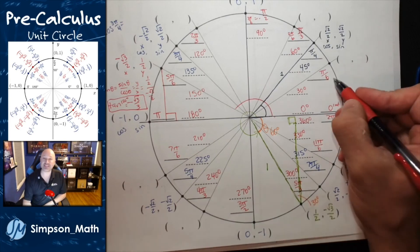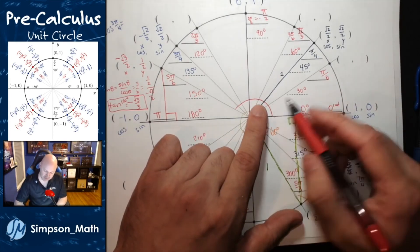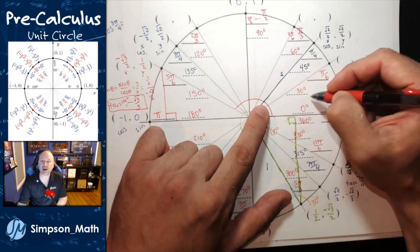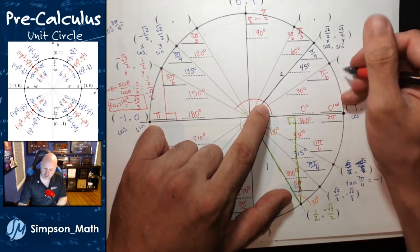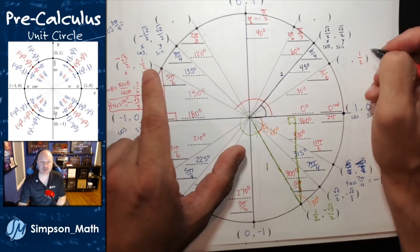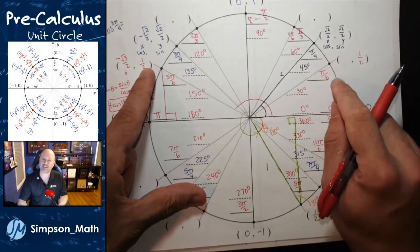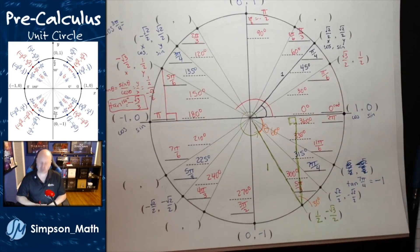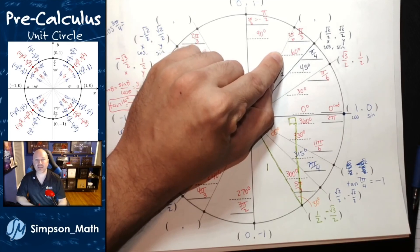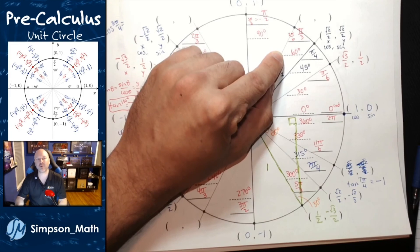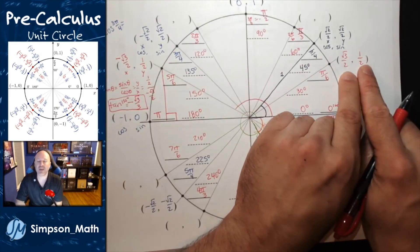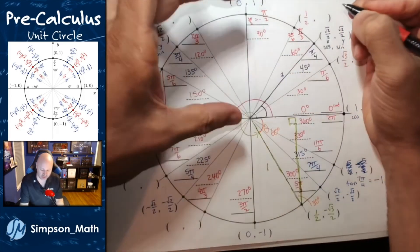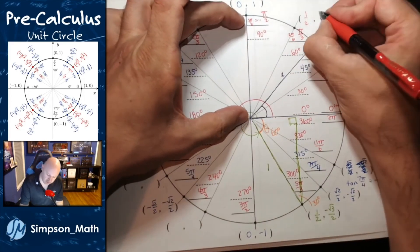In quadrant 1, at pi sixths (30°), the side length opposite the shorter angle is half the hypotenuse, so the y value is one half. The x value is root 3 over 2. For pi thirds (60 degrees), it still forms a 30-60-90 triangle with radius 1 — the values are just swapped. The x is now the shorter side, one half, and the y is now the larger side, root 3 over 2.